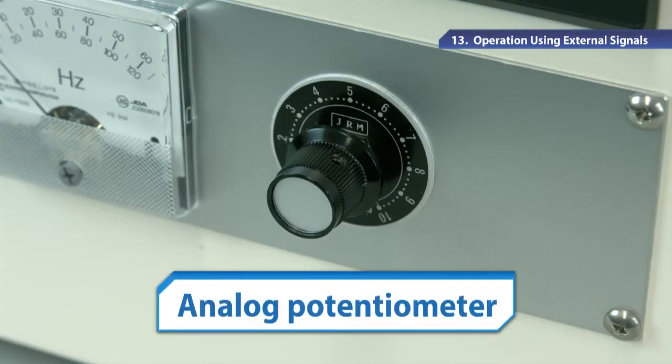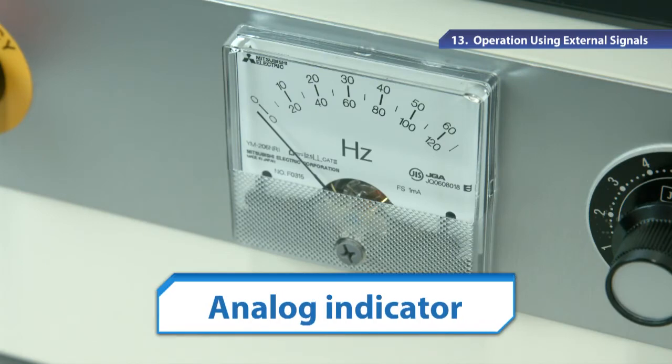You can manually change the motor rotational speed by using an external potentiometer for analog signal. An analog indicator is also available for remote monitoring.